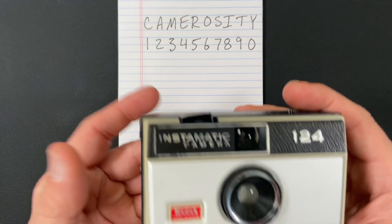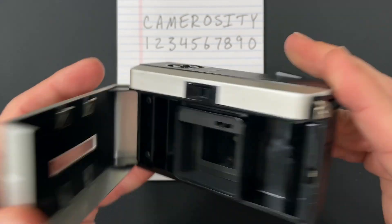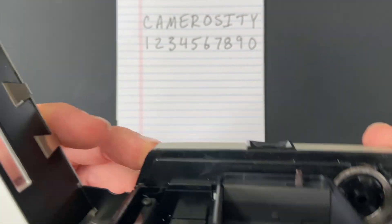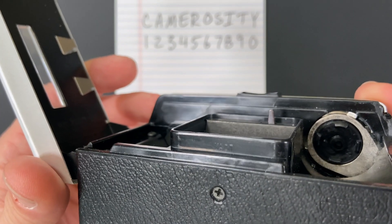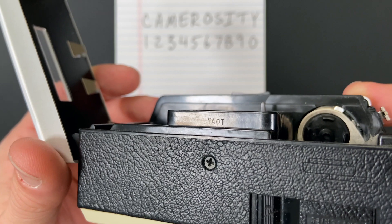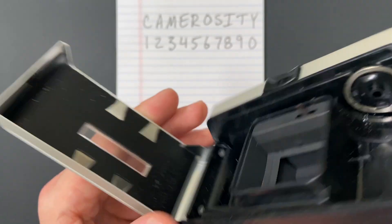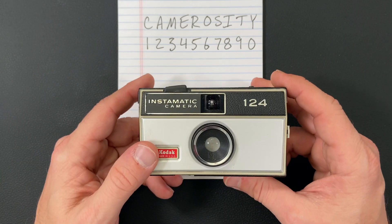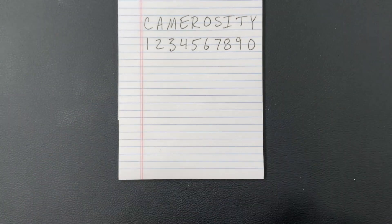I'll show you one more — the Kodak Instamatic 124. The code on this is on the bottom here: Y-A-O-T, translating to 0-2-6-9 — cycle 2, 1969. This camera was produced from '68 to '71, so that falls right into that same slot.